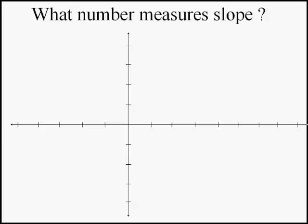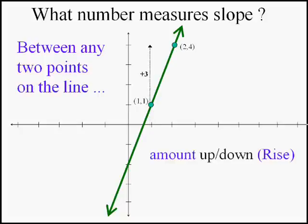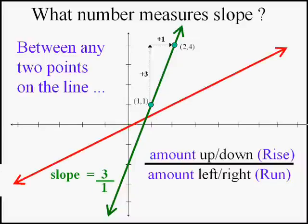So where are we getting these numbers? What measures slope? Well, it's going to stay the same no matter where we are on the line, so we should be able to pick any two points and we can. Slope is defined between any two points as the amount you went up or down divided by the amount you went left or right between those two points. In this case, to get from point one to point two, walking from left to right, we went up three and over one.